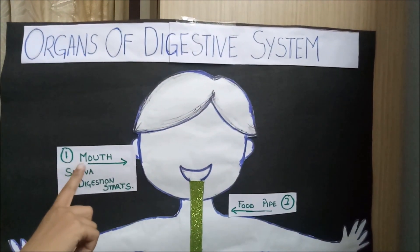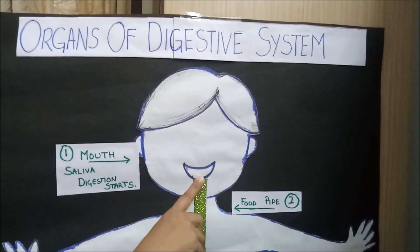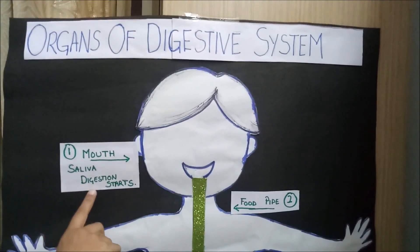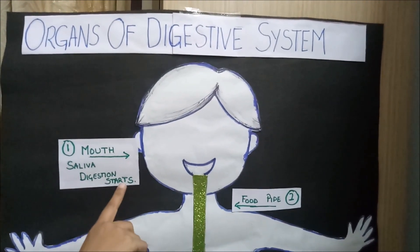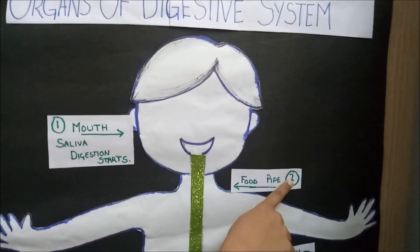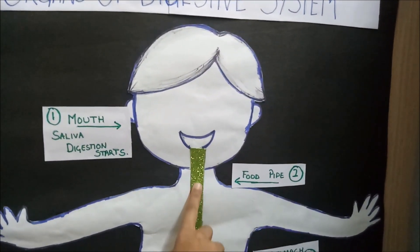First, Mouth — Saliva, Digestion Starts. Second, Food Pipe.